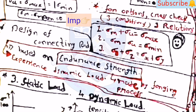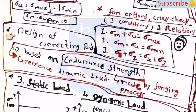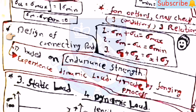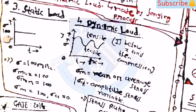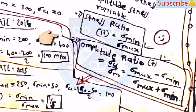Remember that design of a connecting rod is based on endurance strength because it experiences dynamic load and is made by the forging process. For static loading, the diagram shows a horizontal line where Sigma_max equals Sigma_min equals Sigma_m equals 100 MPa and Sigma_a equals zero. For dynamic load, the stress ratio r equals Sigma_min / Sigma_max, and amplitude ratio equals Sigma_a / Sigma_m equals (Sigma_max - Sigma_min) / (Sigma_max + Sigma_min). These four to five equations have many examples asked in GATE examination.